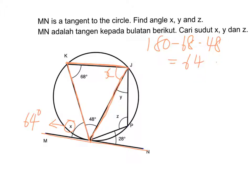Next, let's look at 28 degrees. Now this is the chord for 28 degrees. And the angle that is subtended by this chord in the alternate segment is this, which is y. So y is 28 degrees.